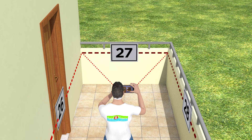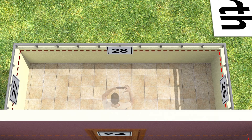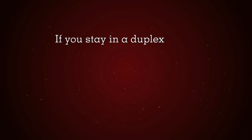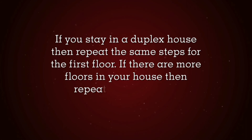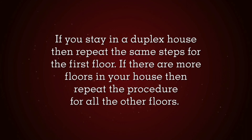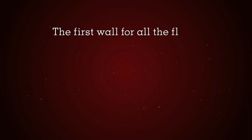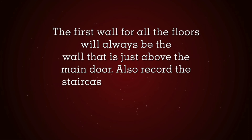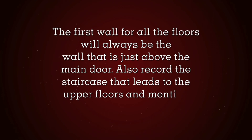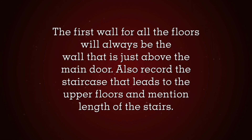If there is a terrace in your house, then repeat the same procedure on the terrace. If you stay in a duplex house, then repeat the same steps for the first floor. If there are more floors in your house, then repeat the procedure for all the other floors. The first wall for all the floors will always be the wall that is just above the main door. Also record the staircase that leads to the upper floors and mention the length of the stairs.